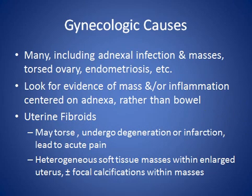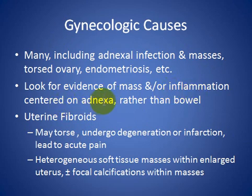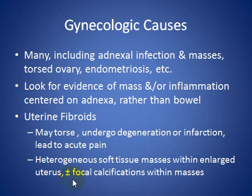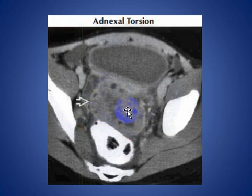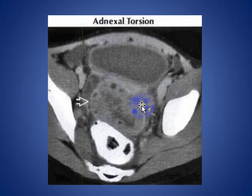Gynecological causes of acute left lower quadrant pain include adnexal infection, masses, torsed ovary, and endometriosis. Look for evidence of mass and inflammation centered on the adnexa rather than the bowel. Uterine fibroid may also undergo torsion, red degeneration, or infection leading to acute pain. We may see a heterogeneous soft tissue mass within an enlarged uterus with or without calcification. Here, axial CT scan with contrast shows an enlarged ovary with peripheral follicles consistent with torsion and ischemia, with lack of enhancement.